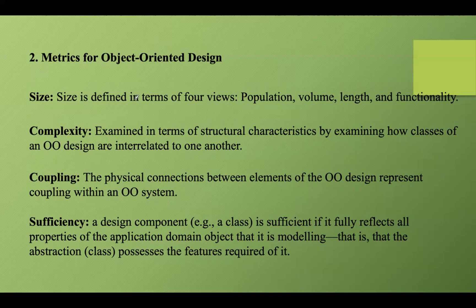Metrics for object-oriented design provide valuable insights into the quality and maintainability of software systems. Here we use the metric 'size,' which is defined using four views: population, volume, length, and functionality. Population is measured by taking a static count of object-oriented entities like classes or operations. Volume measures are identical to population measures but are collected dynamically. Length is a measure of a chain of interconnected design elements — for example, the depth of an inheritance tree. Functionality metrics provide an indirect indication of values delivered to the customer by an object-oriented application.